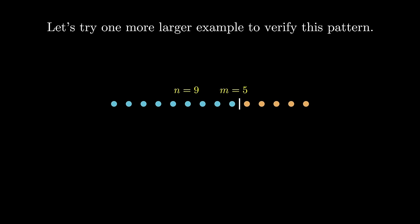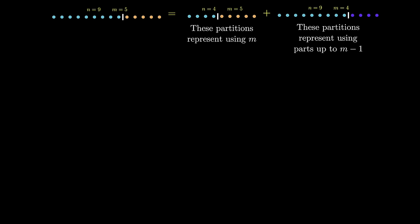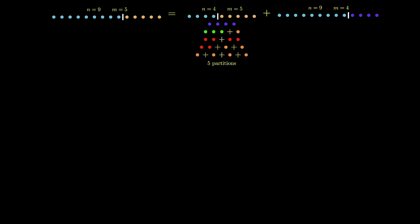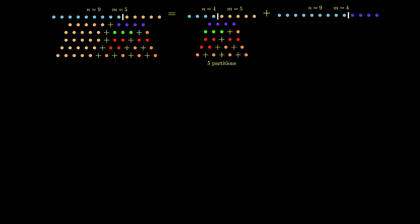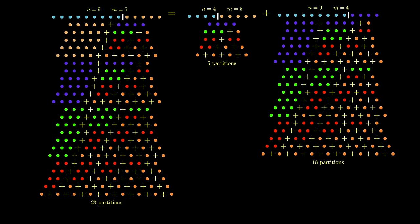Let's look at the case where n equals 9 and m equals 5. Based on our current observations, we expect all the partitions in this case to correspond to the partitions in the n equals 4, m equals 5 case and the n equals 9, m equals 4 case. The first subproblem represents all the partitions that use our original m as part of the partition, and the second subproblem represents partitions that use parts up to m minus 1. By adding m to each of the partitions from the n equals 4, m equals 5 case, we generate the corresponding subset for n equals 9, m equals 5. Combining this with the 18 partitions from the n equals 9, m equals 4 case, we end up with 23 total partitions for n equals 9, m equals 5.